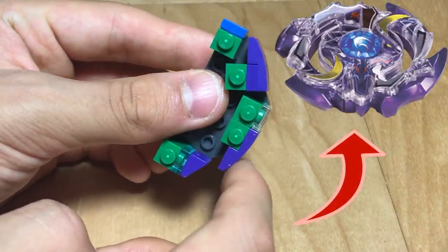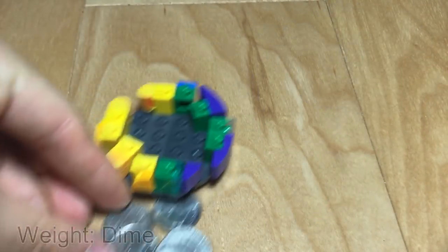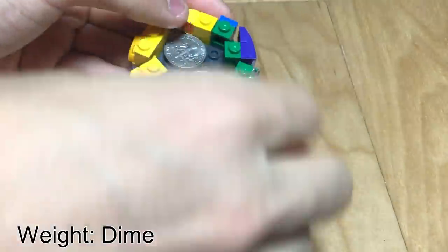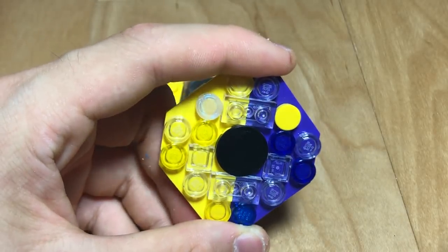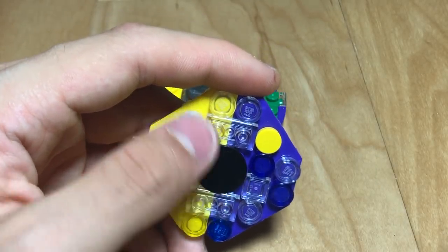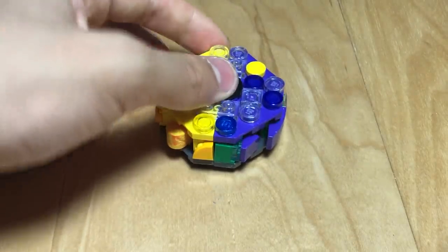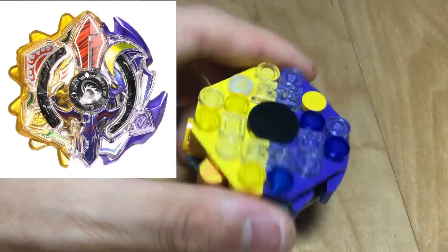Then we put in the weight disc, which consists of 12 dimes. Finally, we put on the top with its nice black center and the corresponding yellow and purple hues on the layer. And boom, we have Lego Eclipse.